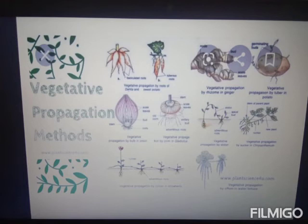Vegetative reproduction is when a new organism forms from the plant body — the offspring are clones of the parent. The different vegetative propagation methods are rhizome, tuber, bulb, runner, offset, sucker, bulbils, and leaf buds.